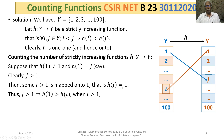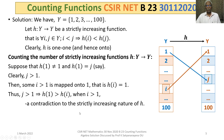Since j = h(1) > 1 and h(i) = 1, we get h(1) > h(i) when i > 1, which is a contradiction to the fact that h is strictly increasing. Therefore, h(1) must be equal to 1.